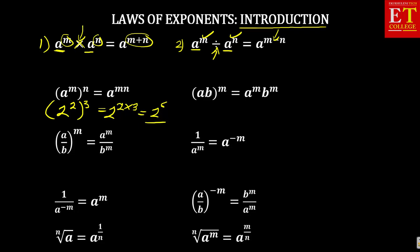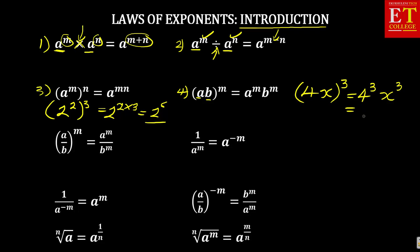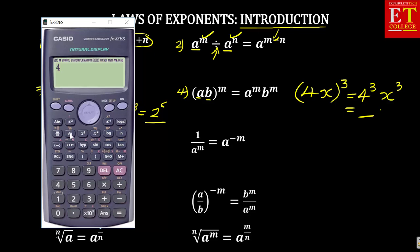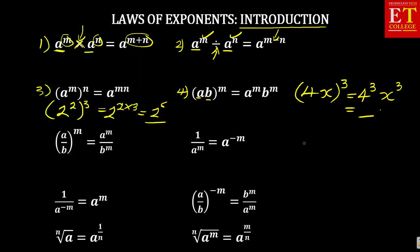That is law number 3. In law number 4, it says when there is a bracket — in this case, a and b inside expressed to the power m — it means each and every variable inside is also affected by the exponent. For example, if I say 4x to the power of 3, it means 4 is affected by the power of 3 as well as x is affected by the power of 3. You simplify to say: what is 4 to the power of 3? 4 cubed is 64, so you will have 64x cubed. This becomes the answer.